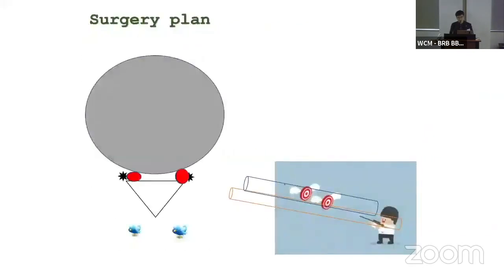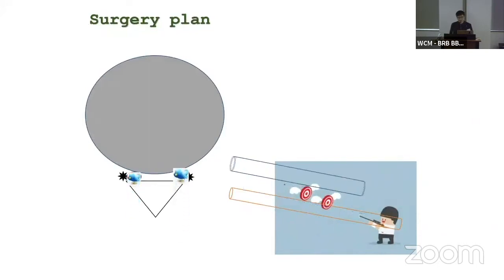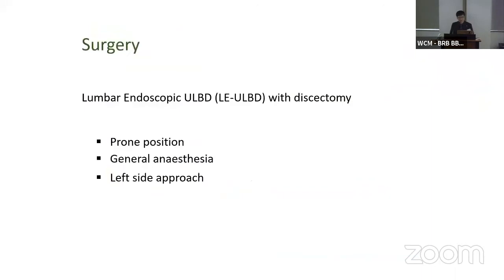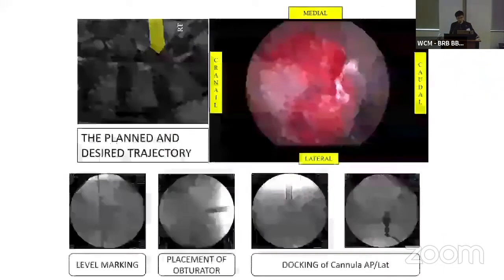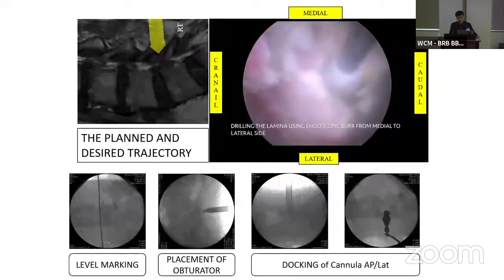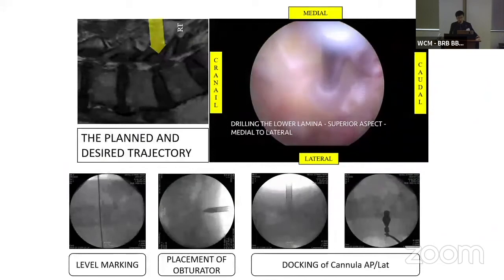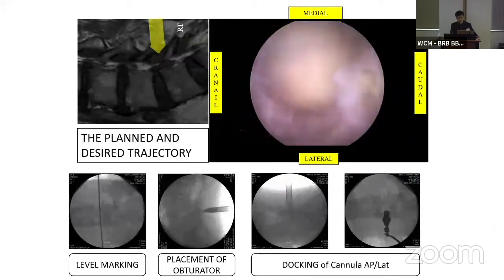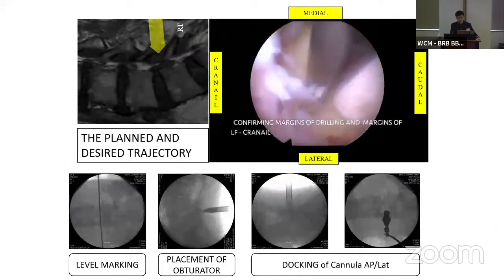This is the surgical plan. There are three kinds of problems: central stenosis and bilateral migrated disc herniation. I performed lumbar endoscopic ULBD with discectomy — prone position, general anesthesia, left-side approach. The first thing we have to do is ideal planning and desired trajectory: draw a line along the midline, mid-pedicle, and end plate on the lateral fluoroscopic image. Then we start drilling from the ipsilateral cranial side and move to the caudal side.